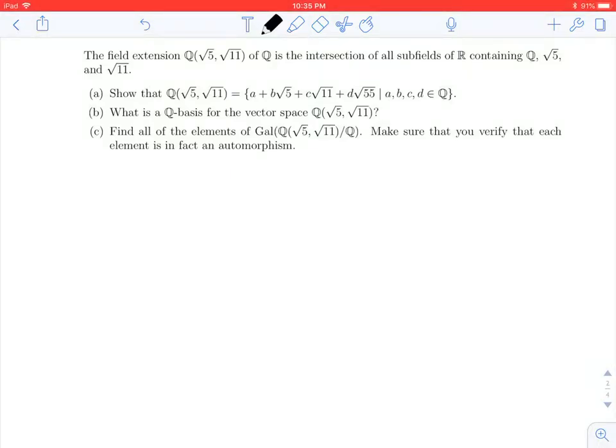Welcome back to the final part of this three-part video series. We're going to look at problem C, where we're going to find the Galois group of Q adjoin root 5 and root 11 over Q.